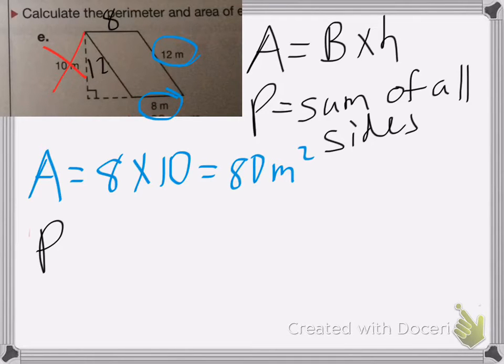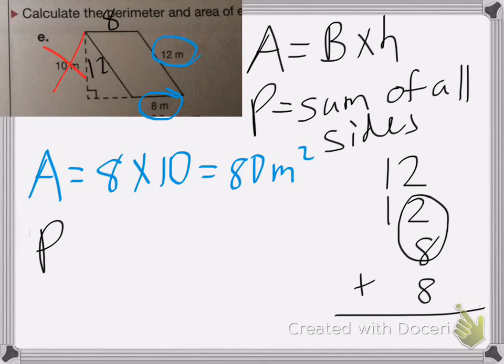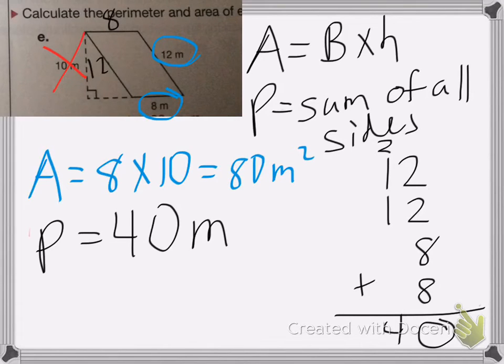Perimeter. So we have 12 plus 12 plus 8 plus 8. So I know that 8 plus 2 is 10, and 8 plus 2 is 10. So that's going to be 20. Put the 0 down, carry my 2. 2 times 1 plus 1 plus 1 is 4. So my perimeter is equal to 40 meters. Do not square perimeter.